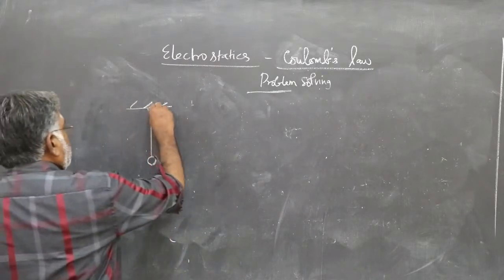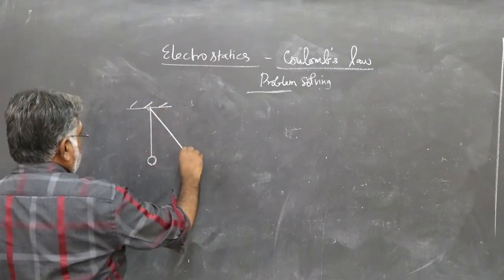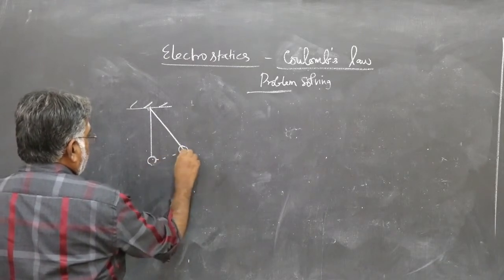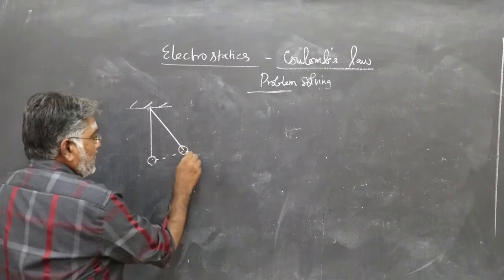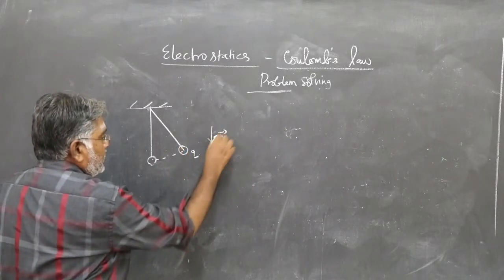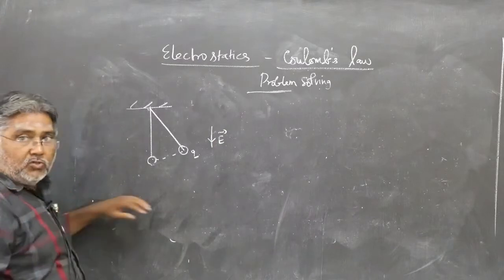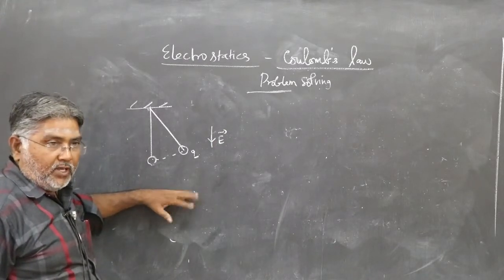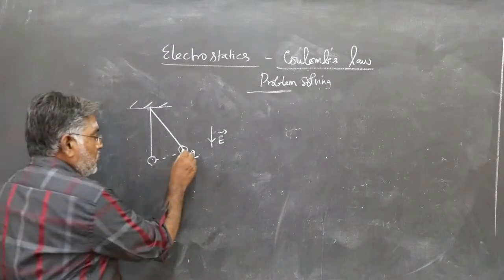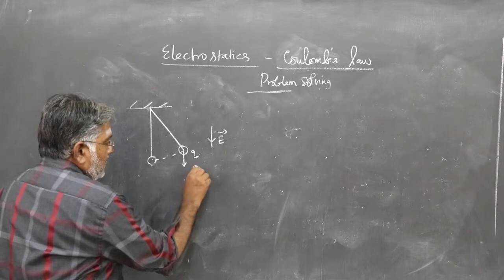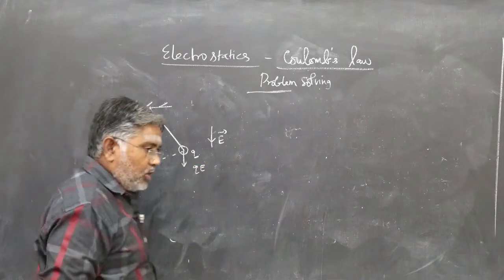Now, if you pull the bob to one side, this is positively charged Q and the electric field is acting vertically downward. A positive charge will always experience a force along the direction of the electric field. So this is Q carrying a charge Q. Therefore, the electric force is QE in the downward direction.